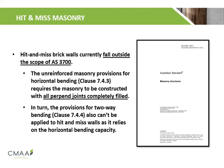Hit-and-miss brick walls currently fall outside the scope of AS3700. This is because the masonry provisions in AS3700 account for all perpen joints being completely filled. Hit-and-miss brick walls don't have any vertical perpen joints, and thus modifications must be made to the calculation process stated in AS3700.